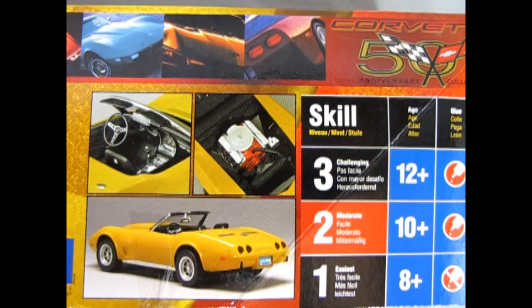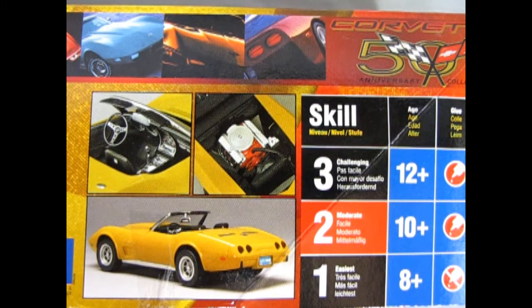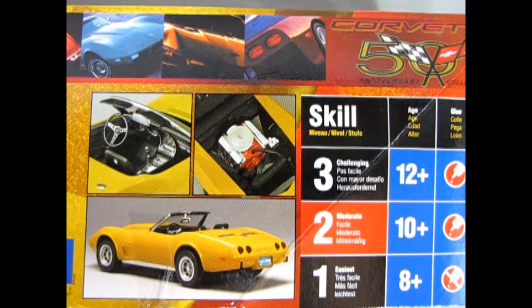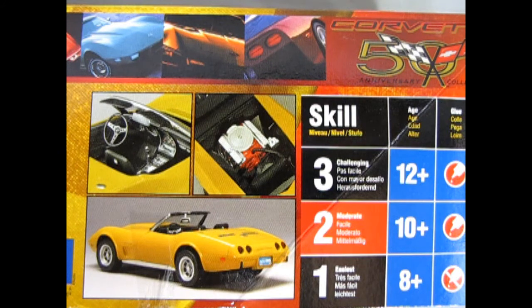As we see on the pictures on the side of the box we have the nice interior, the 350 cubic inch engine, and a nice rear view shot of the impact bumper for 1975.